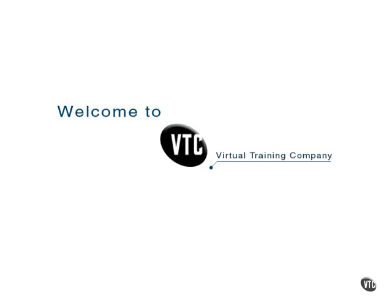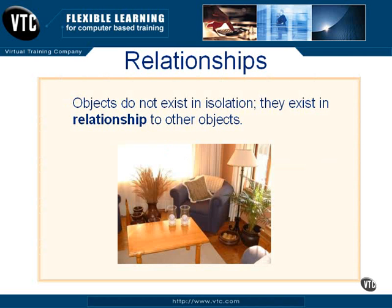Relationships and Object Orientation. Objects don't exist in isolation — they exist in relationship to other objects. An example where you can see that very clearly is in this picture of a living room. The living room furniture is contained inside the living room itself; that's one relationship. The pieces of furniture exist in relation to the other pieces of furniture in the room, and each piece of furniture has a conceptual relationship to the kind of furniture that it is.